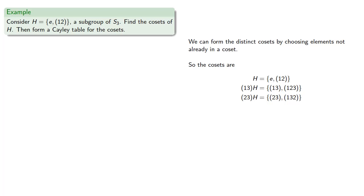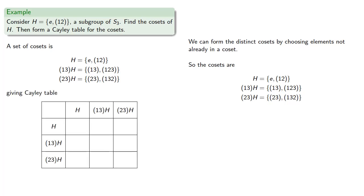And so our set of cosets is the subgroup H, (1,3)H, and (2,3)H. And so our Cayley table is set up as...